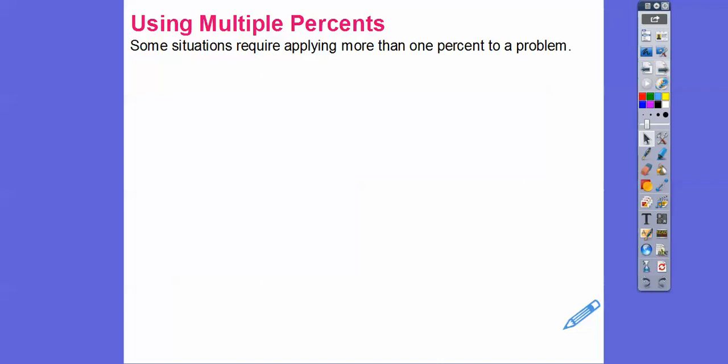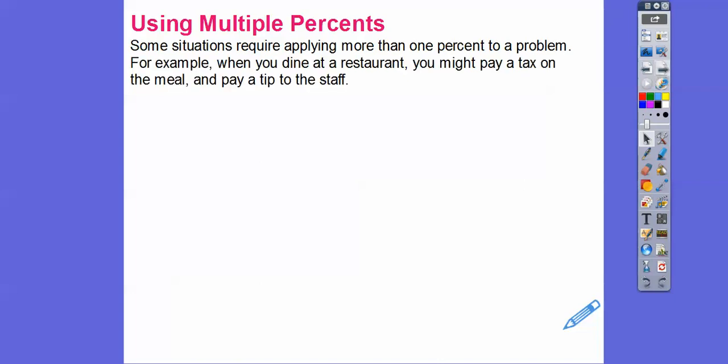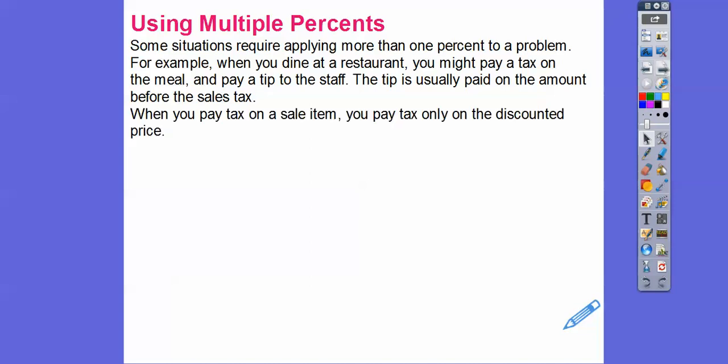Sometimes we've got to use multiple percents. So some situations require applying more than 1% to a problem. For example, when you dine at a restaurant, you have to pay sales tax on the meal and pay a tip to the staff. Typically, a tip is usually about 15% to 20%, but the tip is usually paid on the amount before the tax is installed. And then when you pay tax on an item, you pay tax on the discounted price only. So sometimes they say this car you're saving 20%. Well, you only pay the tax on the 80% that's left.